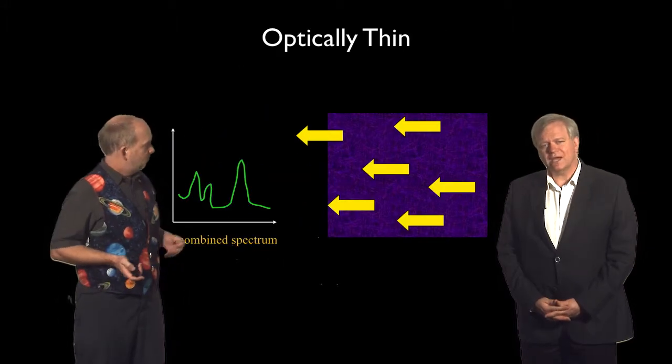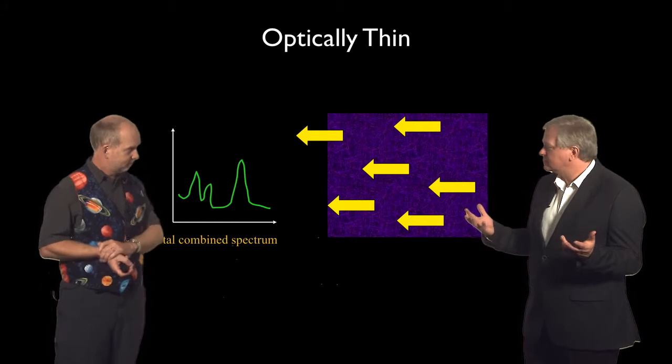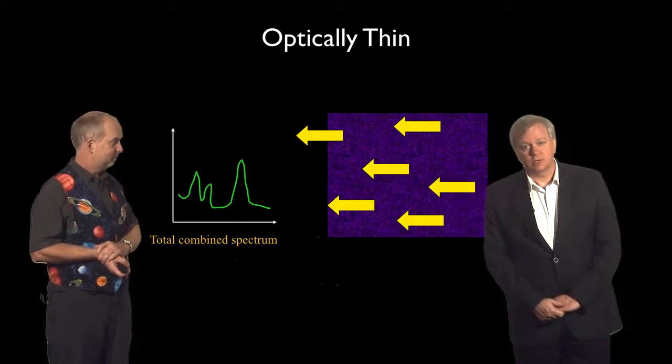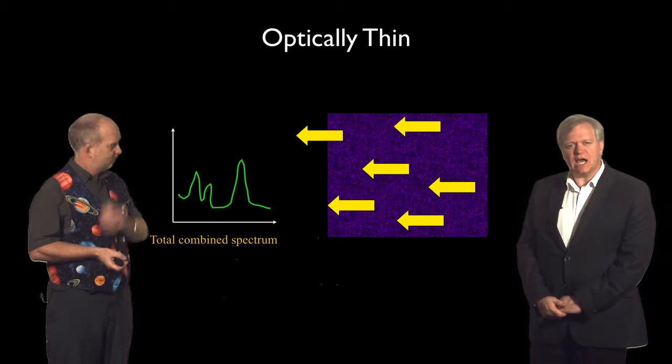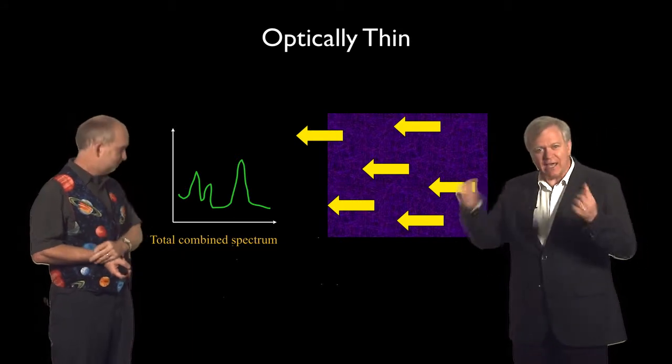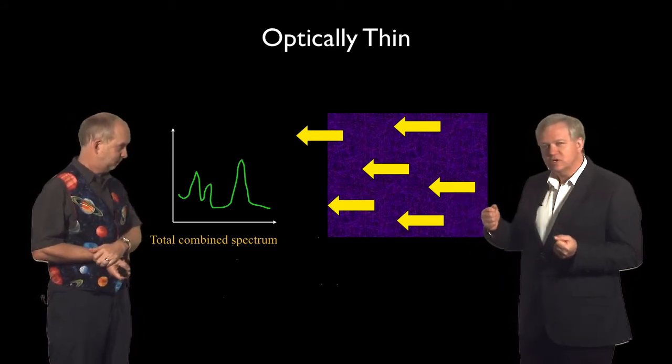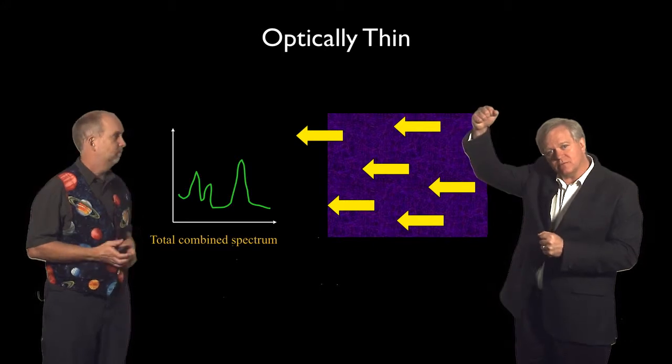Imagine we have a bunch of gas full of hydrogen, and for some reason we're able to excite the hydrogen—that is, we can inject energy into that hydrogen so that some of the electrons go up to level 3.